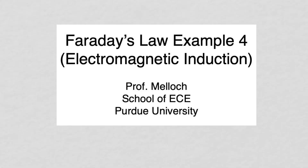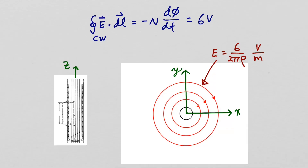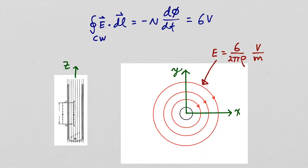In example one, we saw how ramping the current in a solenoid resulted in a changing magnetic flux that produced an electric field intensity. If the ramping current produced an increasing magnetic flux in the z direction, looking through a cross section of the solenoid, the resulting electric field intensities are circles around the solenoid. The current was ramped at a rate to produce an electromotive force of six volts, so the magnitude of the electric field intensity was six over two pi rho volts per meter, where rho is the distance from the center of the solenoid.